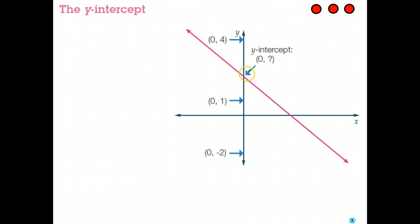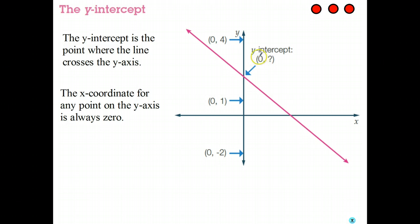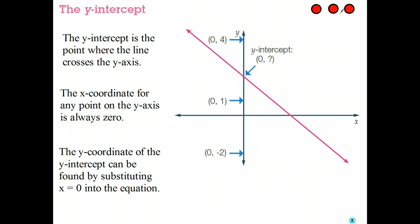Similarly, where the graph crosses the y-axis is called the y-intercept. Once again, it's got an x-coordinate, in this case, of zero. We can figure out what the y-coordinate is by substituting zero into the equation and solving for y. Once we've figured out what the coordinates of the x and y intercepts are, we can then sketch the graph.